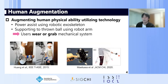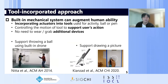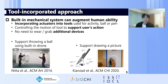There are many attempts to augment human physical ability utilizing advanced technologies. The left figure shows power assist using robotic exoskeletons; the right figure shows support for throwing a ball using a handheld robotic arm. In these approaches, the user has to wear or grab mechanical systems. There is another approach: tool-incorporated approaches, where the researcher incorporates actuators into tools used for an activity — for example, a ball or pen.